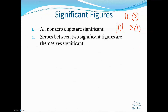Zeros in between two significant figures are themselves significant. So 101 — the zero between the two ones counts — making it three sig figs. If you had 1001, that would be four sig figs. It doesn't matter where the zeros are placed; because they're in the middle, they're going to count. As long as the zeros are sandwiched between two non-zero numbers, they count.